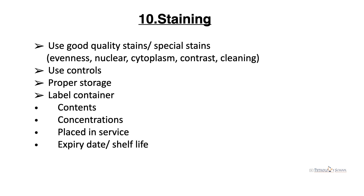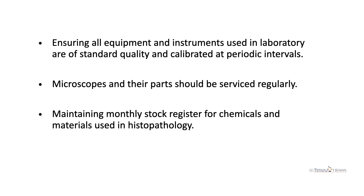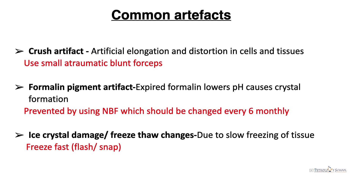For staining, good quality stains should be used, with special stains advised whenever necessary for evenness, nuclear and cytoplasmic identification, contrast, and clarity. Using controls helps maintain stain quality. Proper storage of stains is essential — expired stains should be discarded, containers should be labeled with concentrations and expiration dates, and stored in a proper dark area. All equipment and instruments used in the laboratory must be of standard quality and calibrated at periodic intervals. Microscopes and their parts should be serviced regularly, and a monthly stock register for chemicals and materials should be maintained.